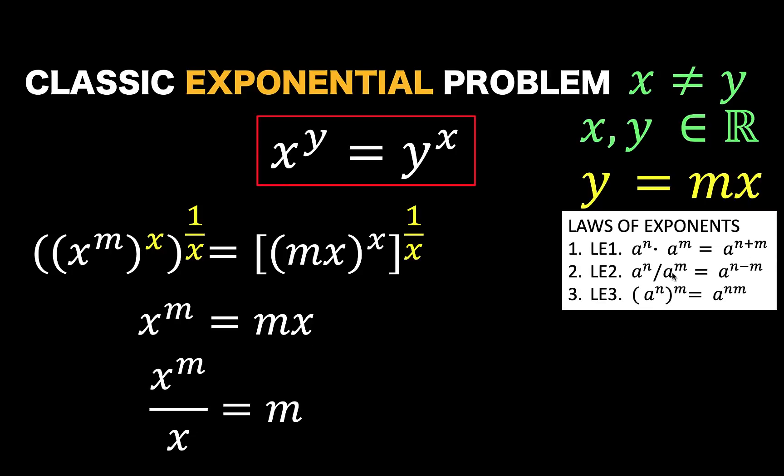Then, apply again this law of exponent. Notice that we are dividing here exponential numbers. It's implied that the exponent of x is 1. So applying LE2, we just have to subtract the exponent m and the exponent 1 that is implied here at the left side. So we now have this result.